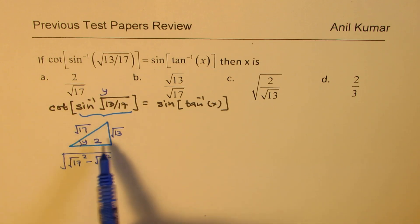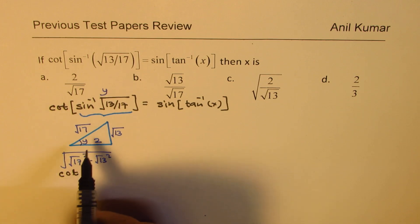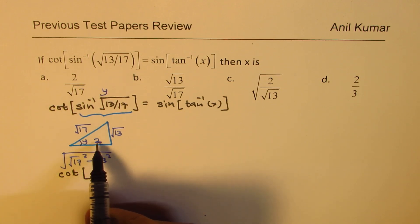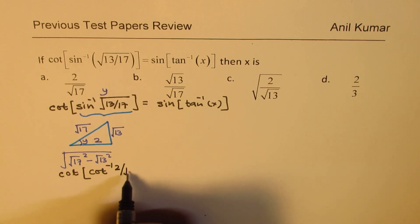So once we get 2, cot of y is what? We could write this as cot of cot inverse. If you see the cot value, it'll be 2 over square root 13. So we can say this is cot of cot inverse 2 over square root 13.